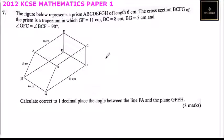This is question number seven. We are told the figure below represents a prism ABCDEFGH of length six centimeters. The cross-section BCFG of the prism is a trapezium.